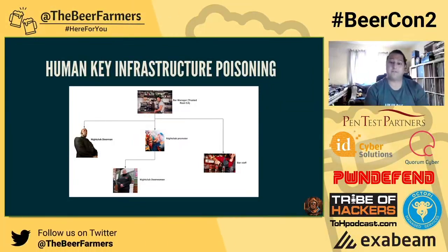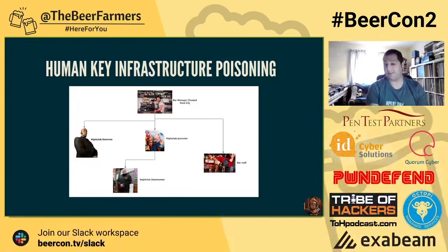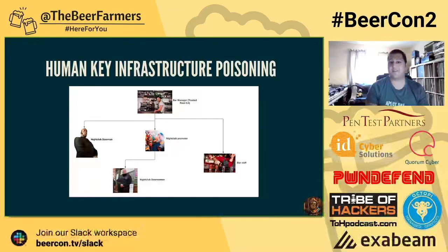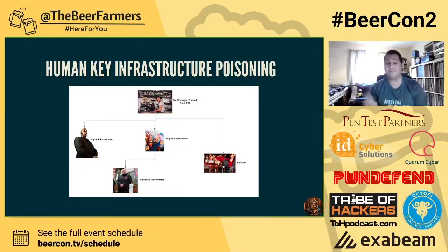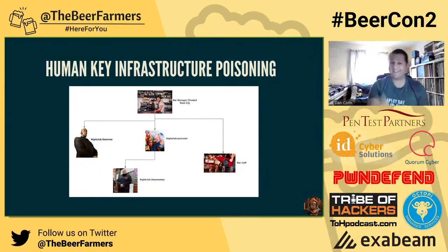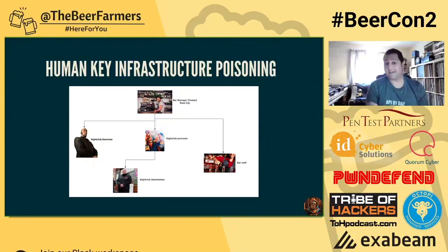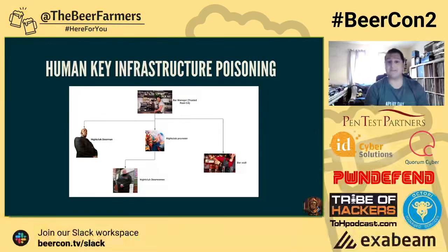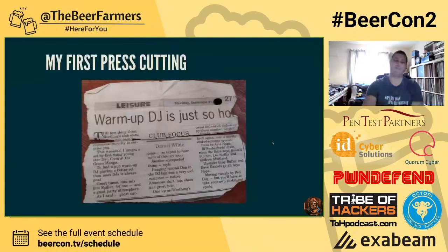In a similar way, I poisoned the PKI of a nightclub — human key infrastructure, HKI poisoning. I was purporting to be an organization that was 18 years old. The bar manager and DJ were trusted entities — a root CA — but they hadn't verified the facts. From the HKI poisoning I gained the trust of the promoter of the nightclub, who gave me a staff VIP card. Door staff and bar staff now accept I'm 18 through the trust of the bar manager and the promoter. The promoter also suggests I come to an open decks night and the pre-club bar — I'm now a resident DJ.